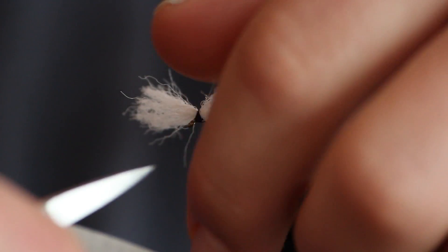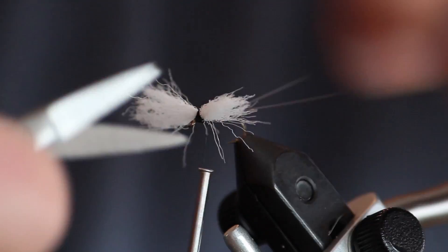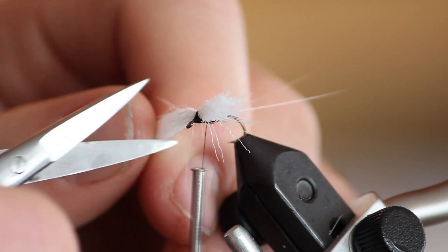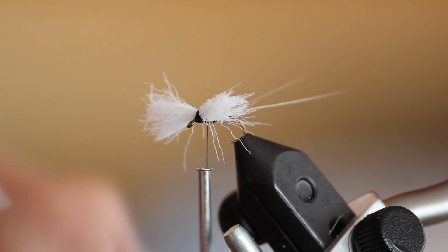Once you have secured the poly yarn, cut your wings to the desired size. Trim out any outlined hairs of the poly yarn.